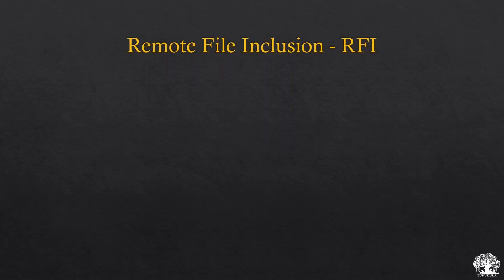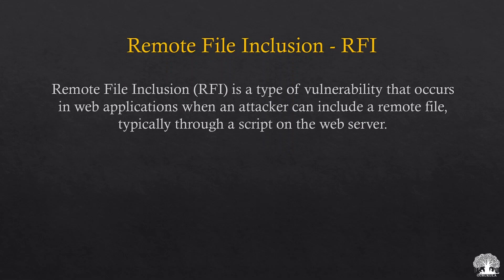What exactly is remote file inclusion? Remote file inclusion is a type of vulnerability that occurs in most web applications when an attacker can include a remote file, typically through a script on a web server. In the previous video, we spoke about local file inclusion, where we can modify the URL so that the web application fetches any file that is present on the web server itself — fetching file content that is locally present on that server.